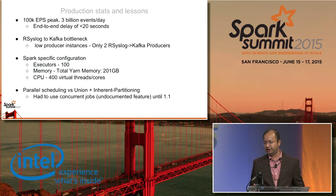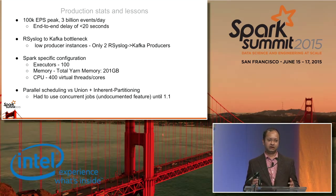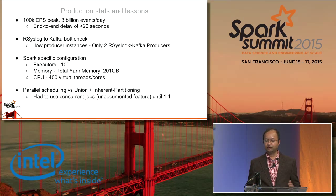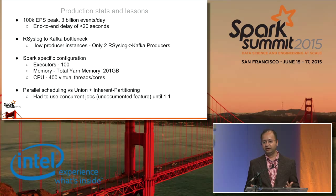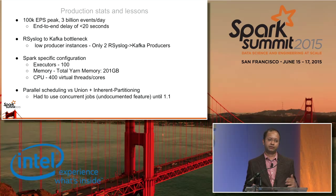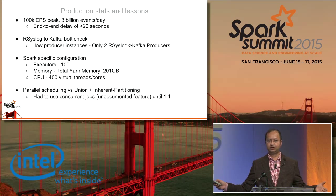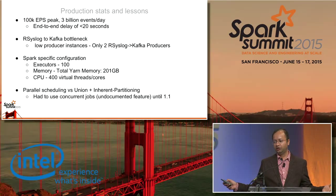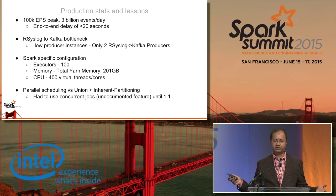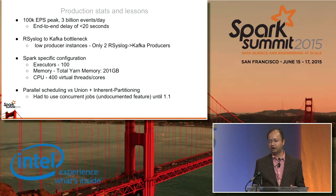We've been running this stack for some time now, so here are lessons we've learned over the past few months. We currently hit about a peak of 100k events per second, aggregating to 3 billion events a day. End-to-end delay from when we receive a message in syslog to when it shows up in Elasticsearch is typically about 20 seconds, which is fairly good — and it's a factor of how much hardware you throw at the problem.